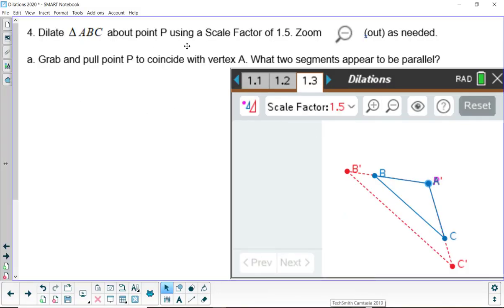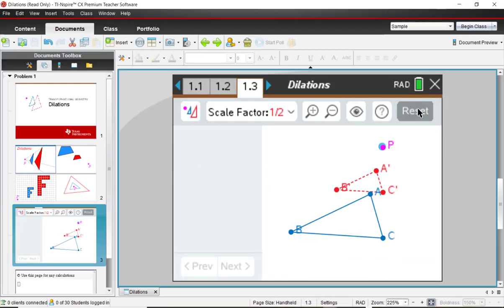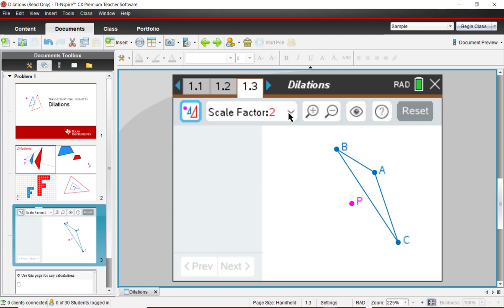So let's proceed to number 4. We're going to dilate the triangle using a scale factor of 1.5. And we're going to put point P to coincide with vertex A. So let's do that. So I'll reset. Scale factor to 1.5. Dilate. Zoom a little bit. And go ahead and move around. It says to put P coincide with A. That's different. A and A prime ended up on the same part.